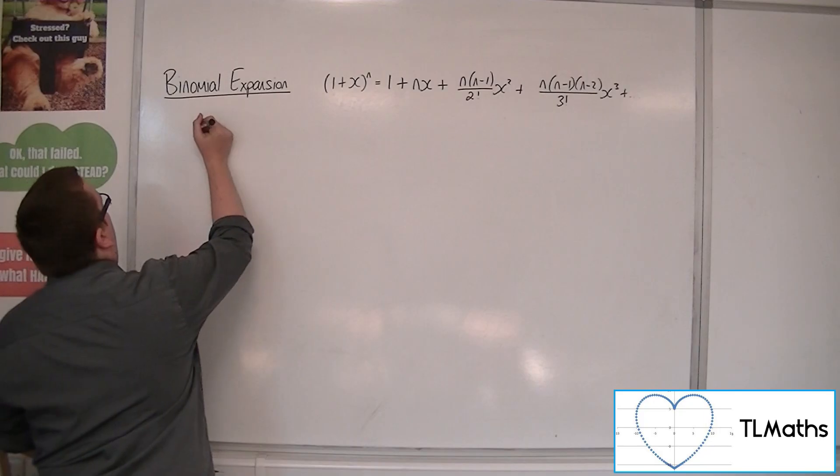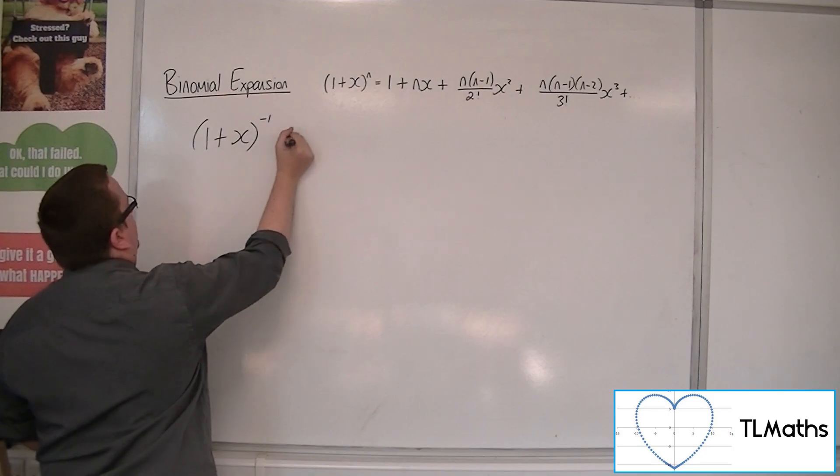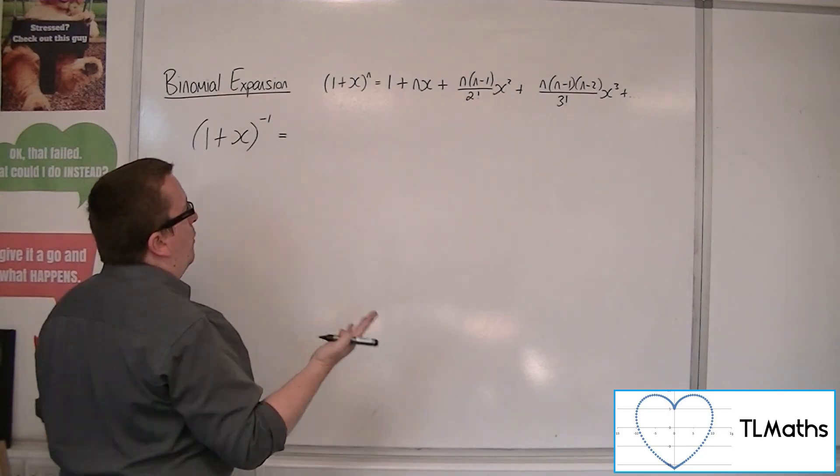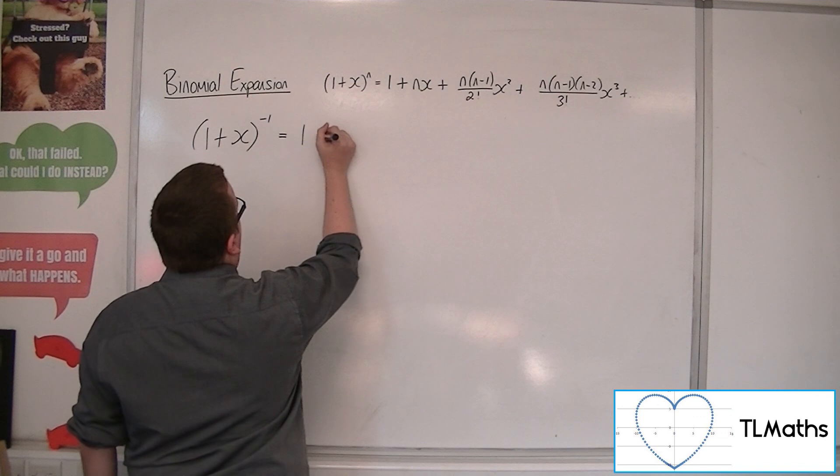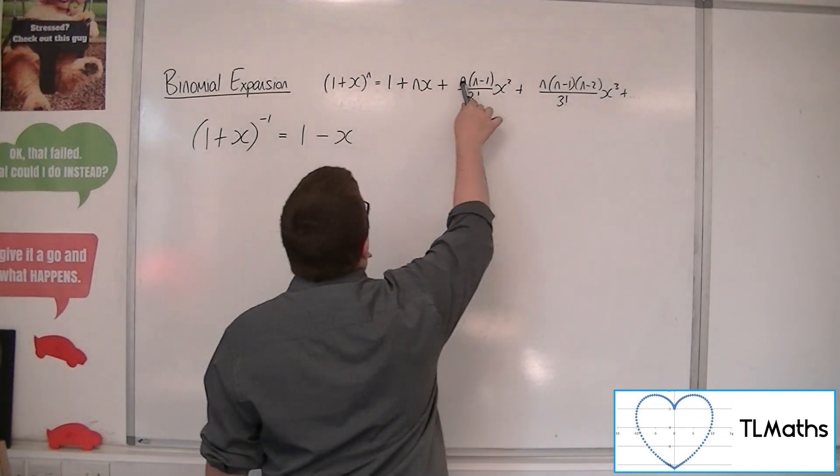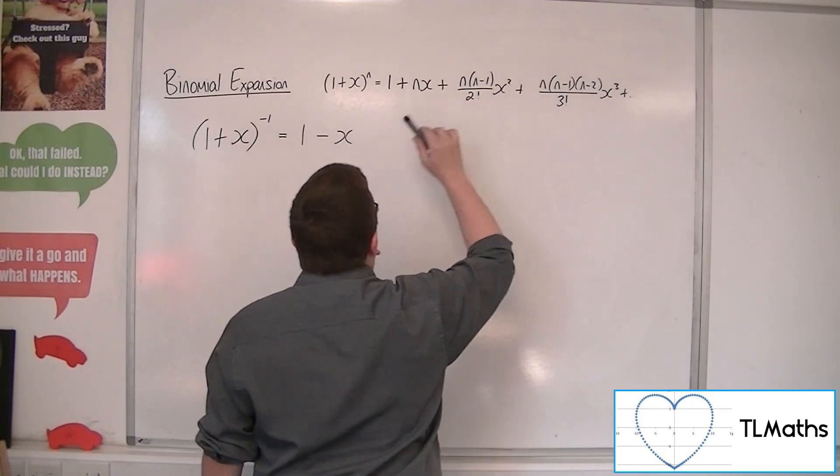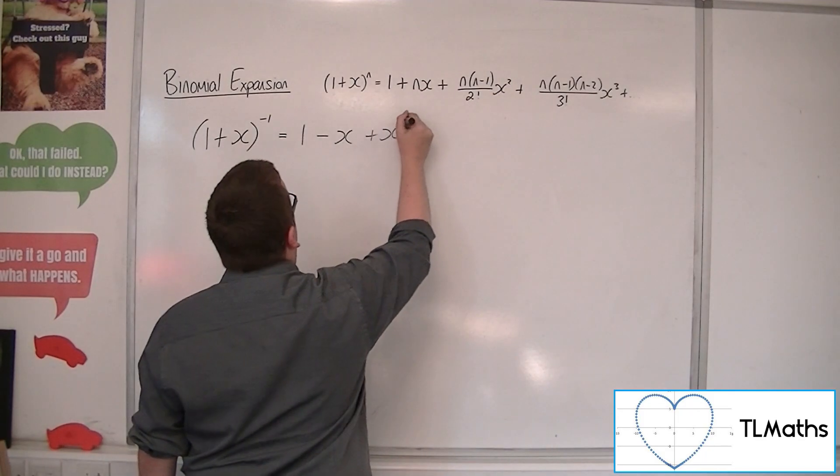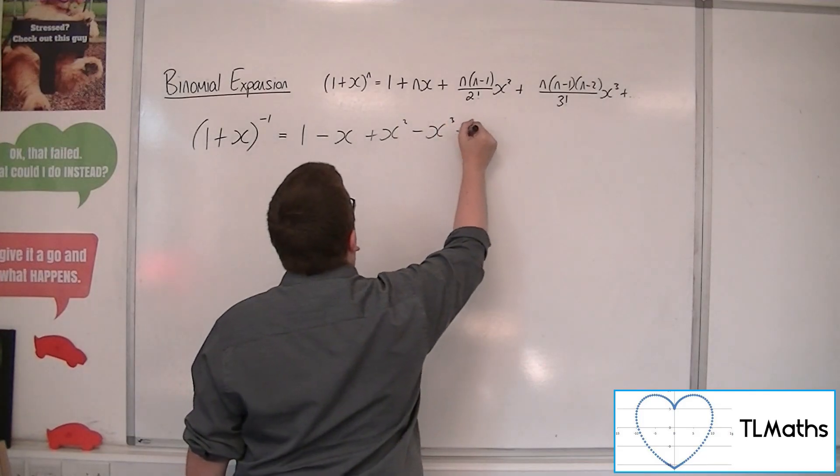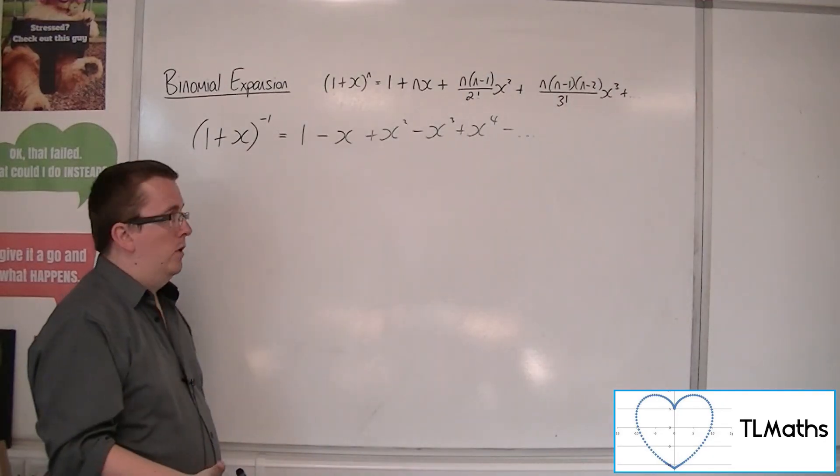if I said that we wanted the expansion of 1 plus x, let's just go to the minus 1, then what we would have is 1 take away x, then we've got minus 1 times minus 2, so 2 over 2, which is 1, x squared, so plus x squared, minus x cubed, plus x to the 4, minus x to the 5, plus x to the 6, and so on.